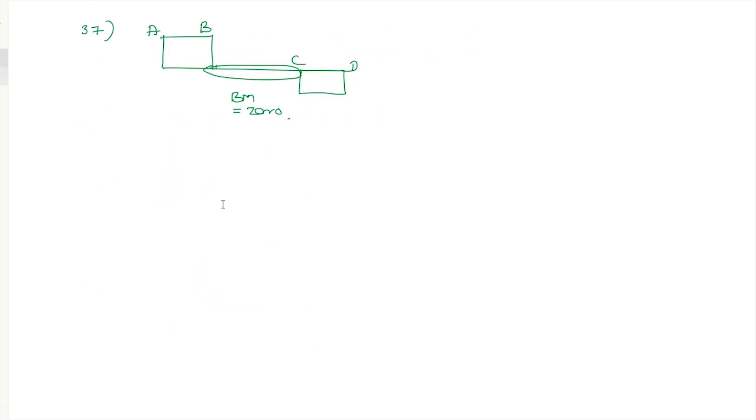In manufacturing, the non-consumable electrode welding process is TIG welding — that is the correct answer.